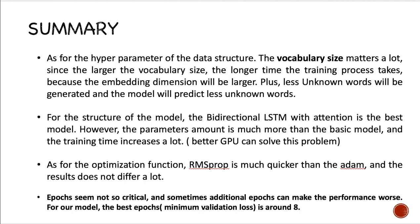As for the epochs, epochs seem not so critical to our model, and sometimes additional epochs can make the performance even worse. For our model, the best epochs with the minimum validation loss is around 8.